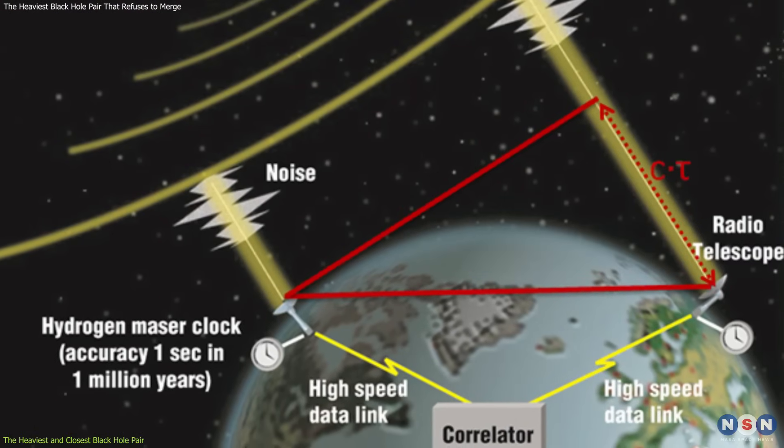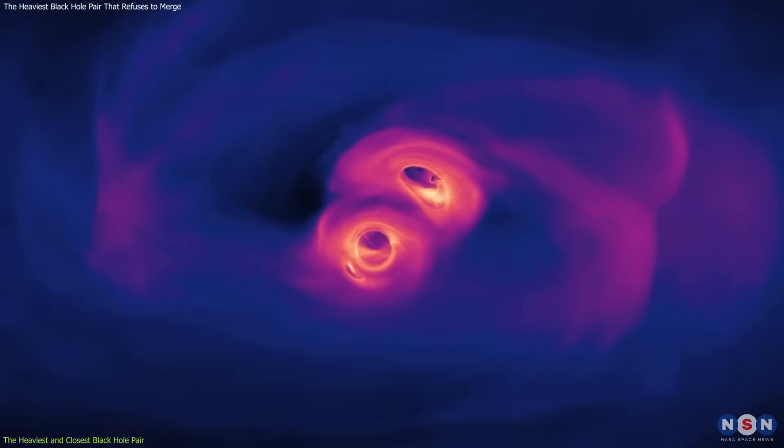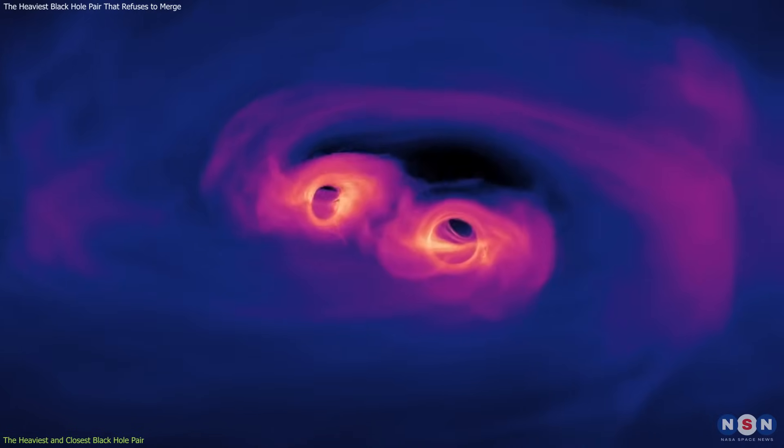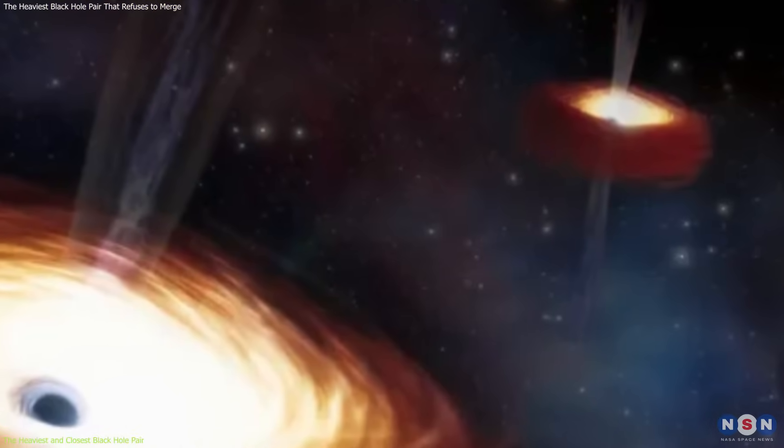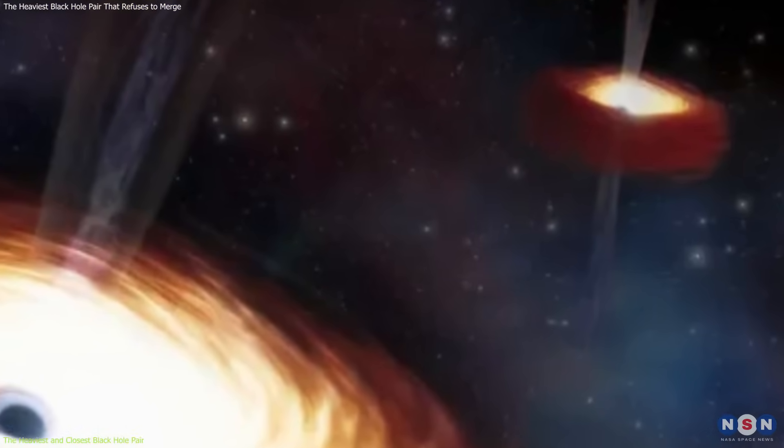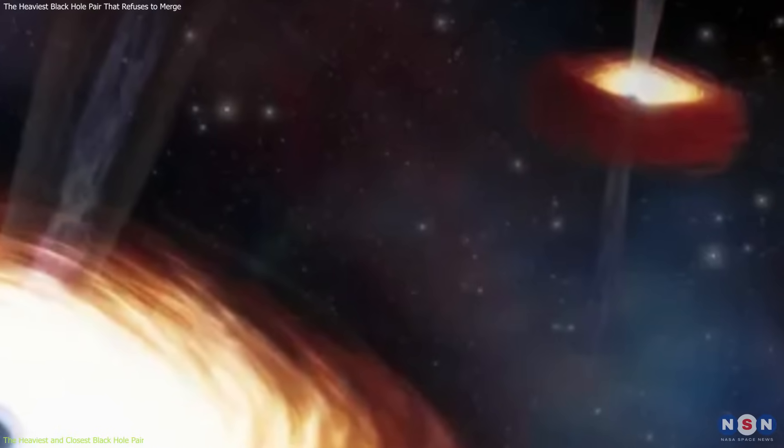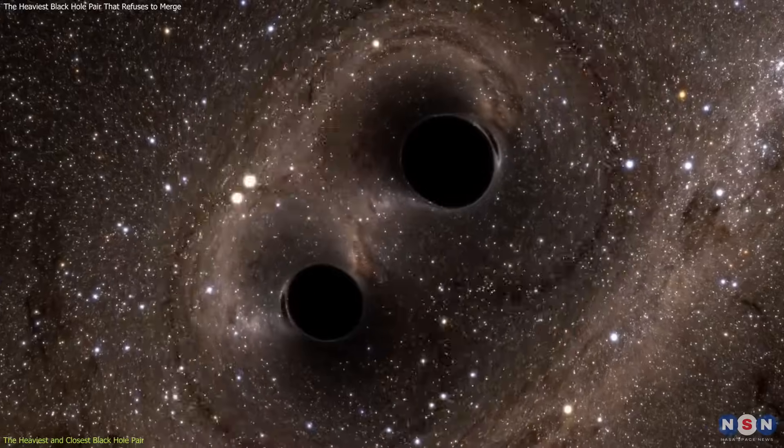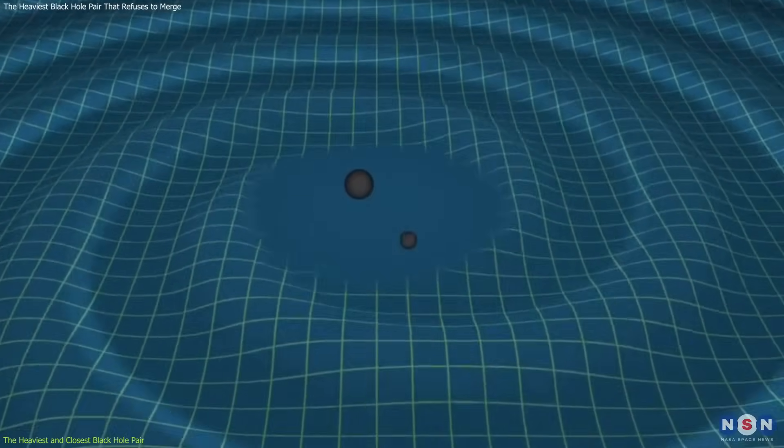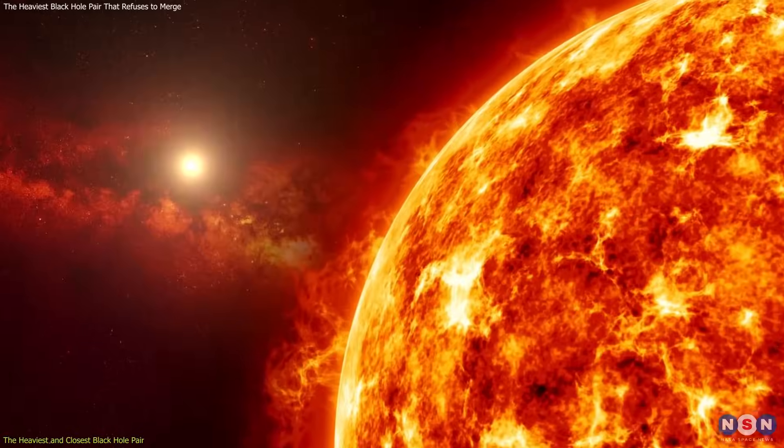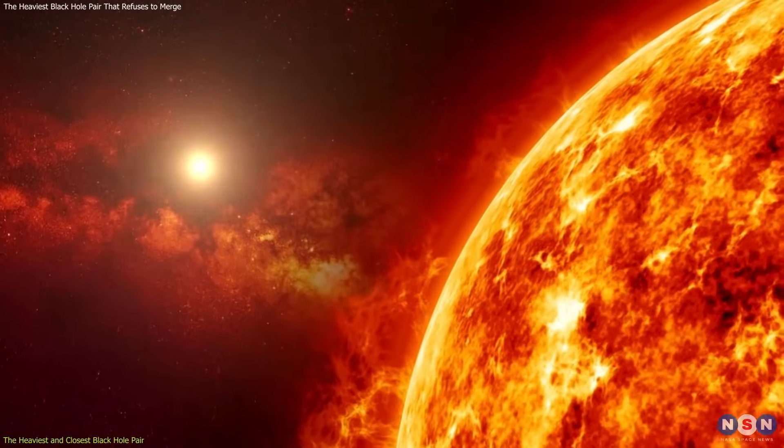Using VLBI, the astronomers measured the mass, distance, and orbital period of the black hole pair. They found that the black holes have masses of 9.5 billion and 5.5 billion times the sun, respectively, making them the heaviest pair ever seen. They are separated by only 24 light years, about the distance from the sun to the nearest star.